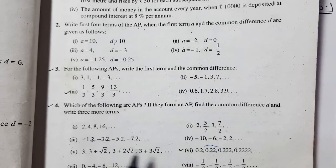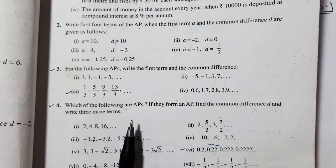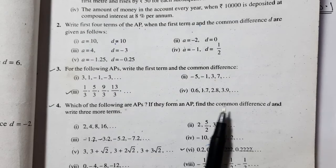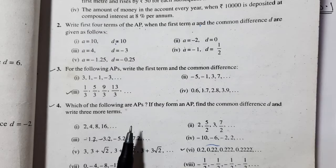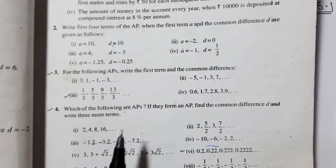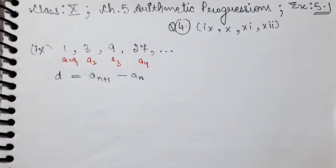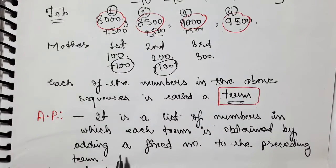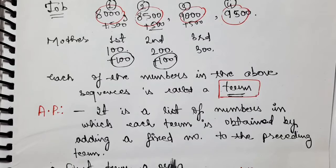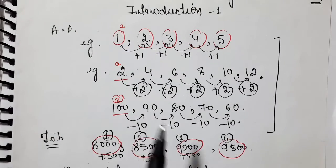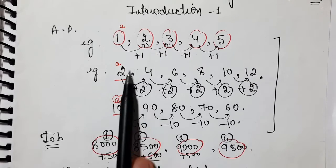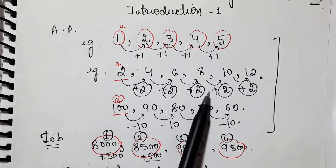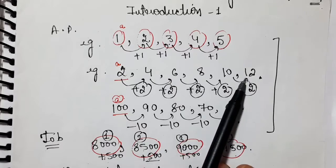Here, we are given a list of numbers and we have to check which ones form an AP. If an AP is formed, we find the common difference D and write three more terms. For that, you have to be clear on the definition of AP. It is a list of numbers in which each term is obtained by adding a fixed number to the preceding term — for example, 2, 4, 6, 8, 10, 12. So we call this an AP.